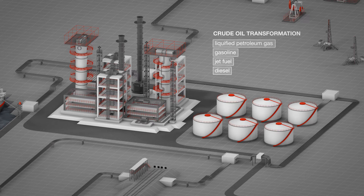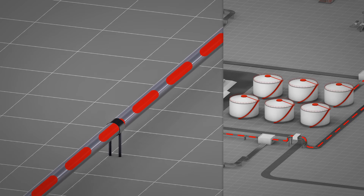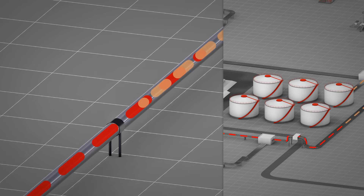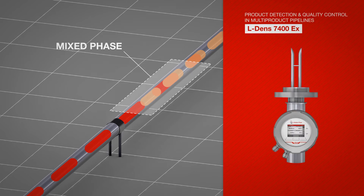After the refining process, the finished products are pumped via multi-product pipelines to tank storages. Imagine gasoline running through the pipeline to a gasoline storage tank, and right afterwards diesel runs through the same pipeline to a diesel storage tank — a so-called mixed phase occurs. With the help of density measurement, you are able to keep the costs generated by product loss due to the mixed phase to a minimum and continuously supervise the quality of the incoming product.